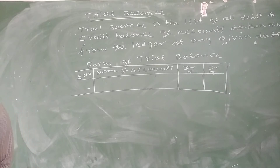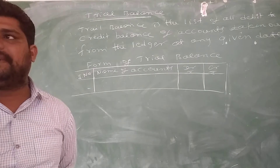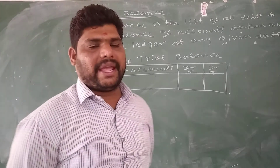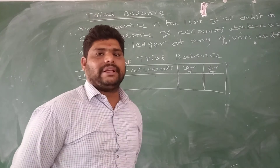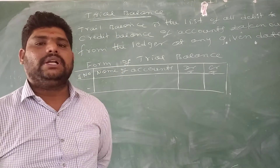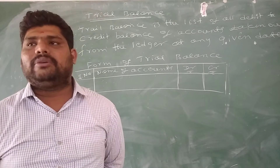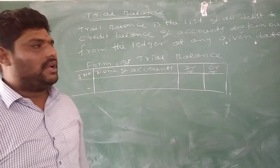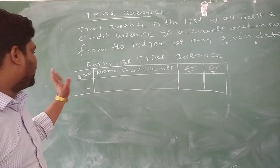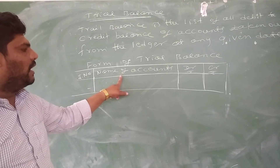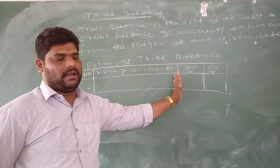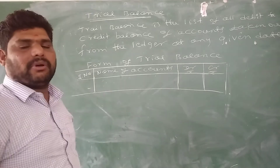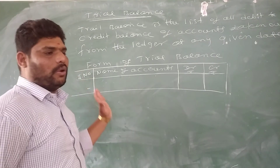Final accounts — the third chapter is purely practical. The main concept now is preparing the trading accounts, profit and loss account, and balance sheet. First, how to prepare the trial balance: the format contains serial number, name of the account, either debit or credit, and the trial balance lists all account items one by one.